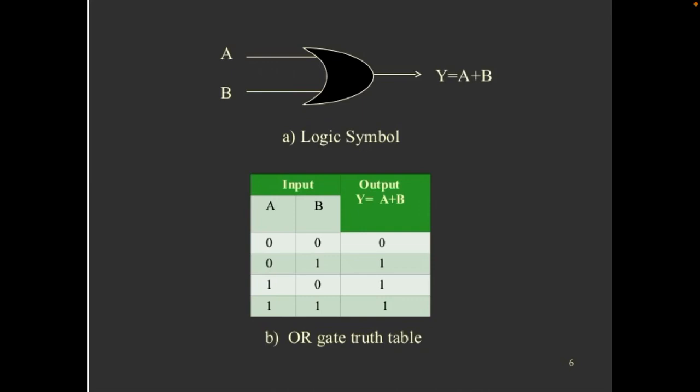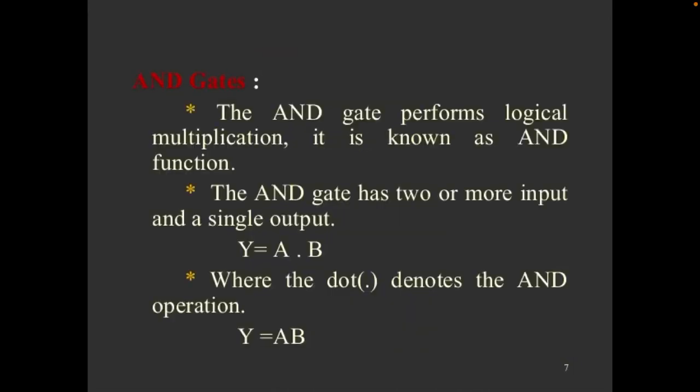The truth table are there. Next one is AND gate. The AND gate performs logic multiplication. It is known as AND function.